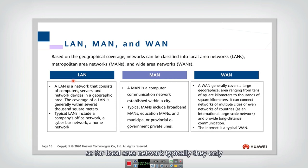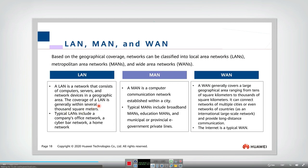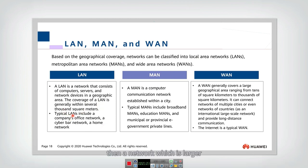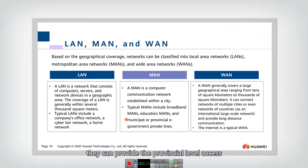For a local area network, they typically only cover several thousand square meters. Usually our company's office network, the home network are all local area networks. A network which is larger than the local area network is the metropolitan area network. Typically it will cover a city, and they include the broadband metropolitan area networks, which can provide provisional access.